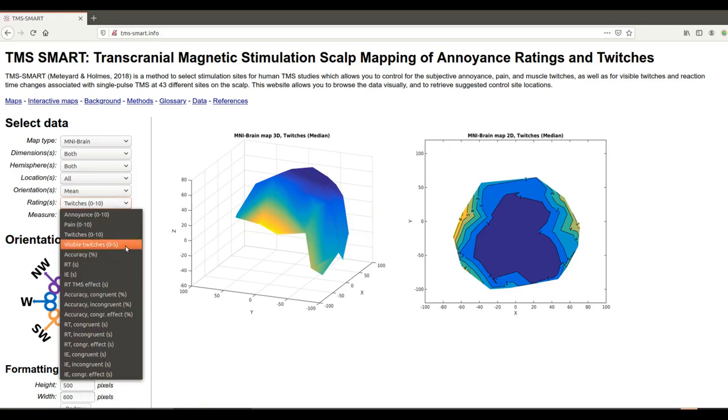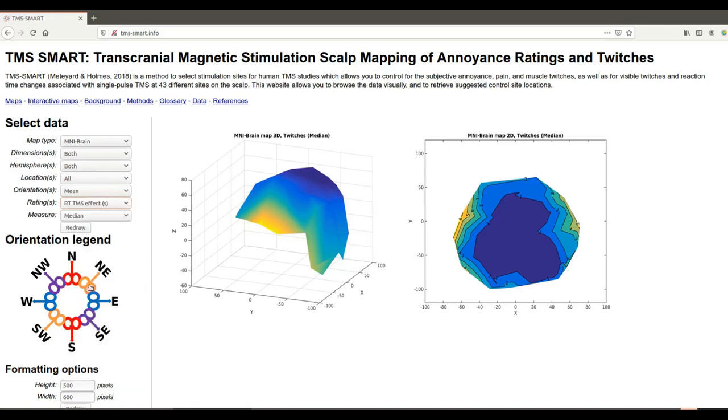Perhaps most usefully for psychological experiments is to use this reaction time TMS effect measure. Let's just redraw the map. So this is how much TMS interfered with your ongoing reaction time task. And you can see the same sort of effect is found. Larger interference with your reaction time task when TMS was near the face and less interference on top of the head.